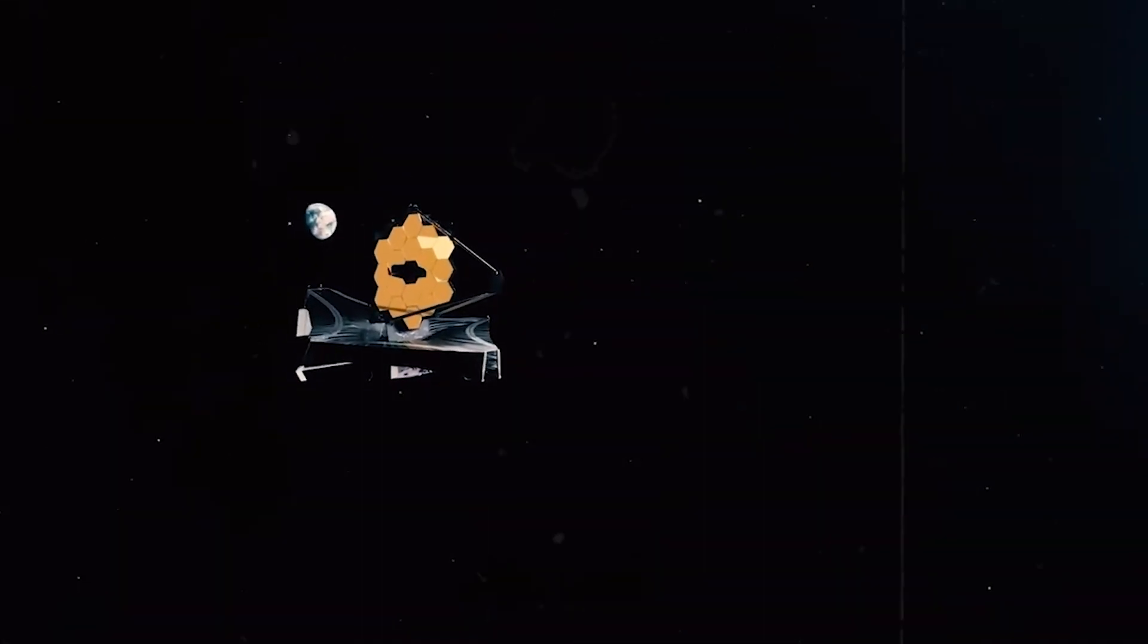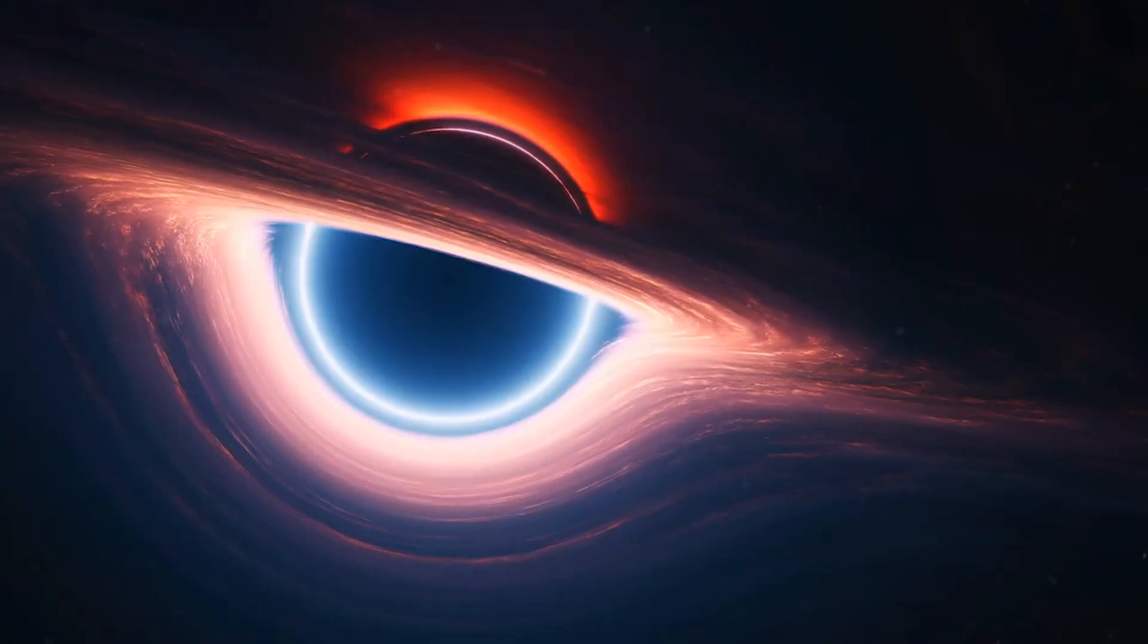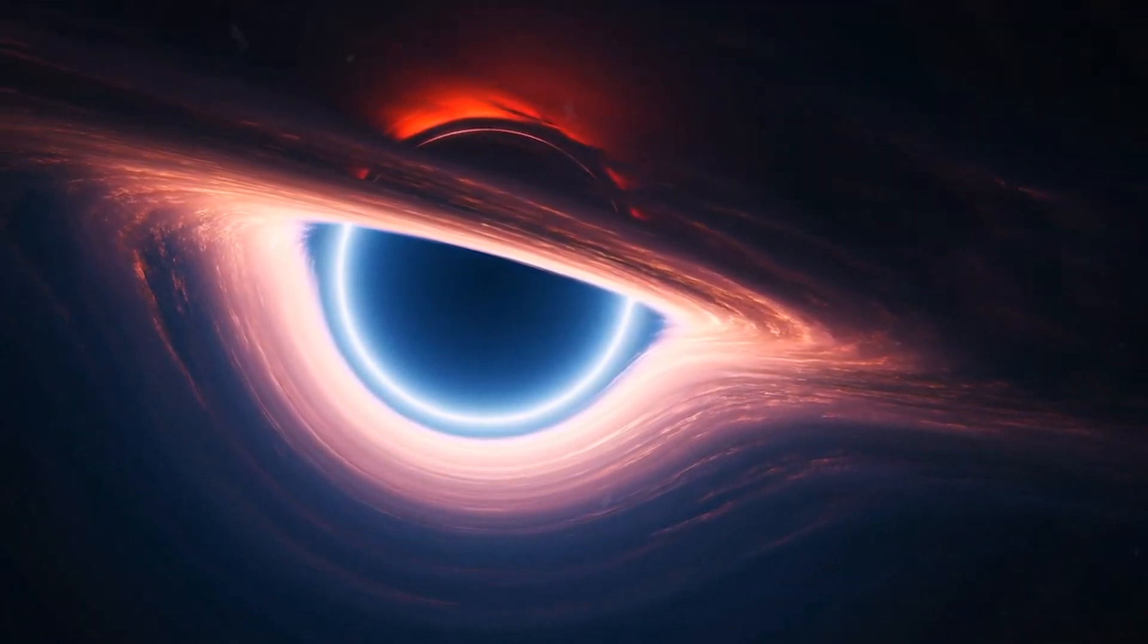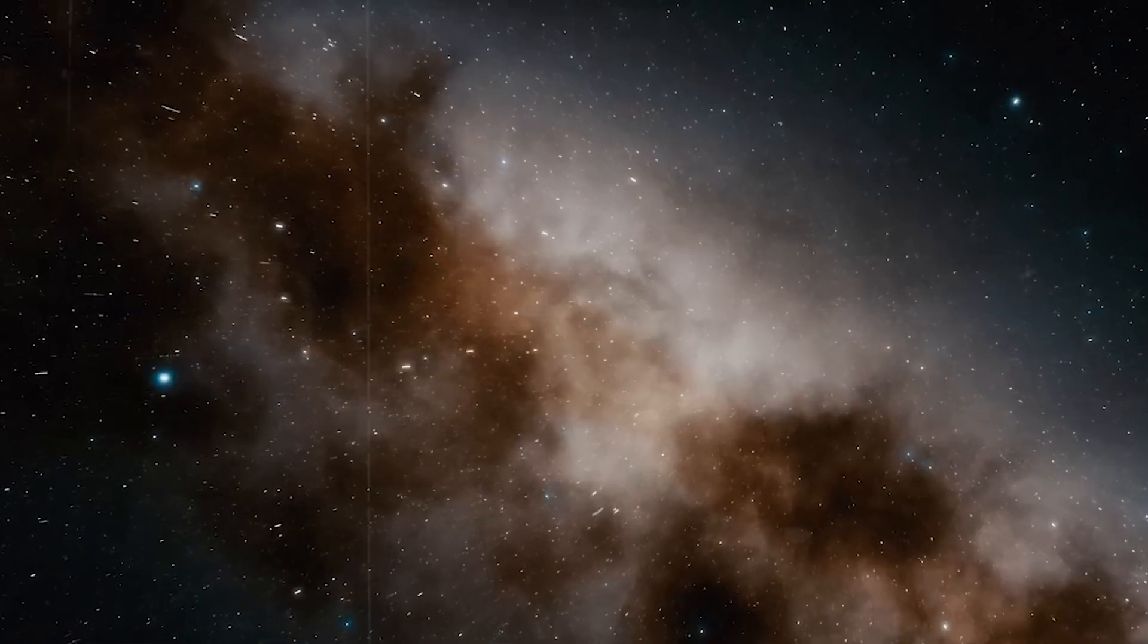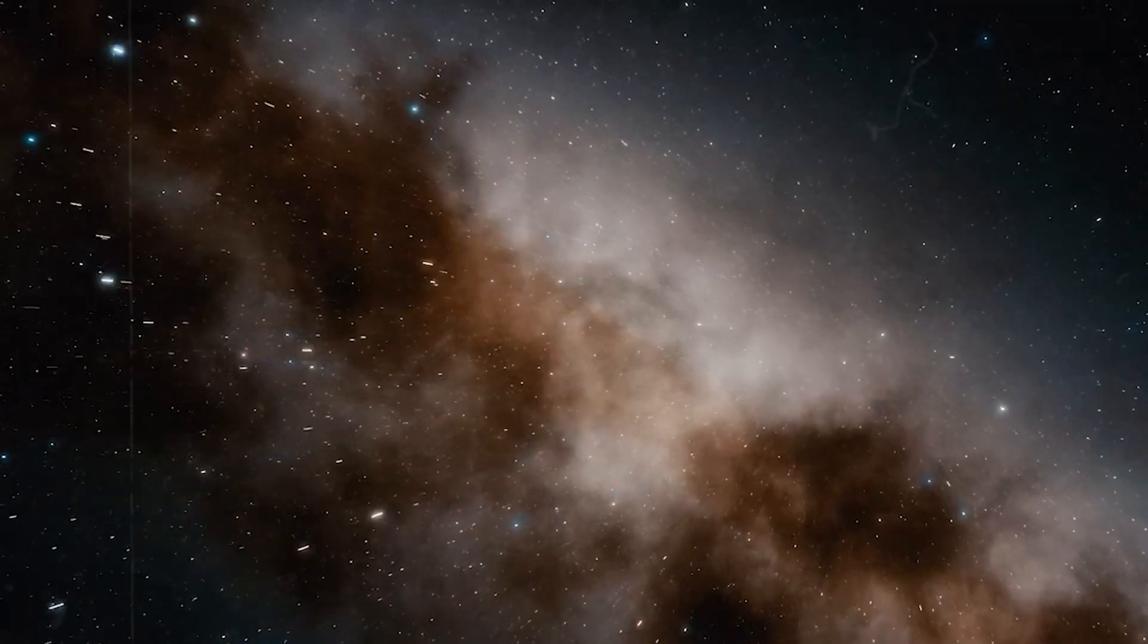But now comes the next bombshell. In addition to the impossible galaxies, James Webb also discovered six presumably very old black holes which also existed only a few hundred million years after the Big Bang. The Quasar Epoch has therefore obviously been wrongly assessed, at least in terms of its dating.